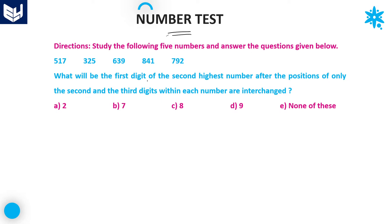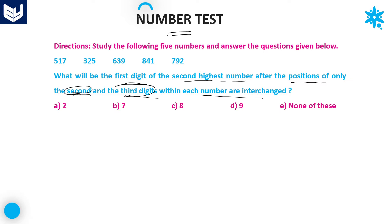Now let's see the question: study the following five numbers and answer the questions given below. The five numbers are 517, 325, 639, 841, and 792. The first question asks: what will be the first digit of the second highest number after the positions of only the second and third digits within each number are interchanged? First, you need to interchange the second and third digits — that is, the units place and tens place — within each number.